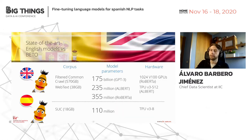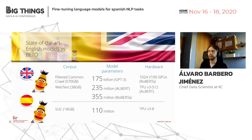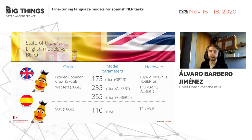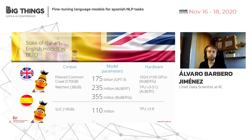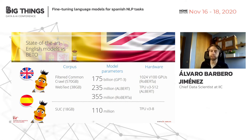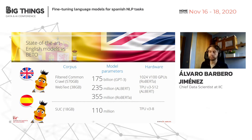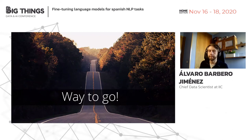Comparing the Spanish language model against the latest English models reveals a huge difference: datasets available for English are about 20 times larger, and the neural networks are correspondingly larger. GPT-3 is an exception — too large for most practical applications — but other strong English models are two to three times the size of Beto, requiring better hardware. There is a clear room for improvement in Spanish.